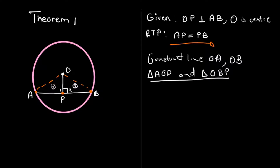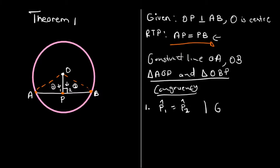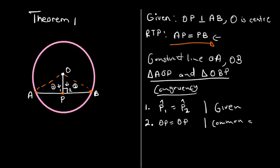Because we are required to prove that AP equals PB, we're going to use congruency using these triangles. The first thing is that angle P1 is equal to angle P2. The reason for that is given — because we were told that OP is perpendicular to AB. Another thing is that they share a common side: OP equals OP. The reason for that is common side.